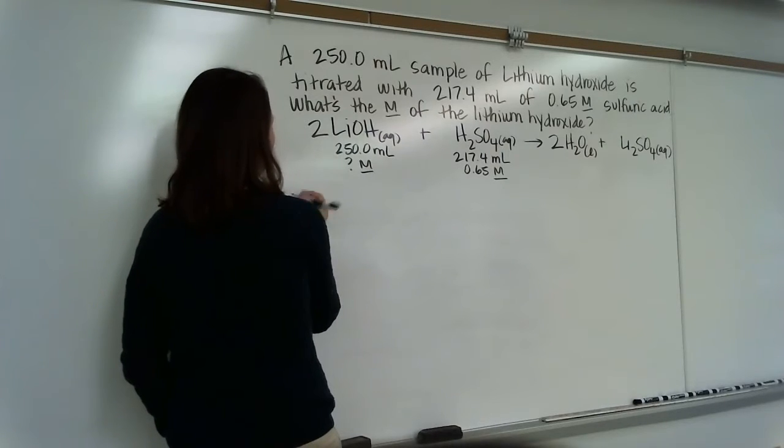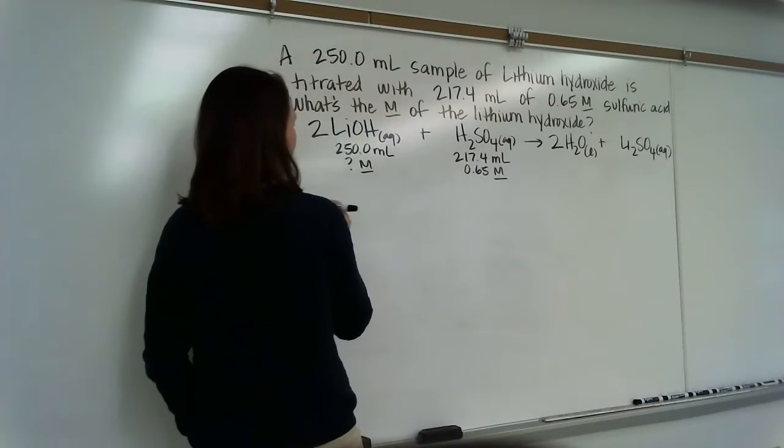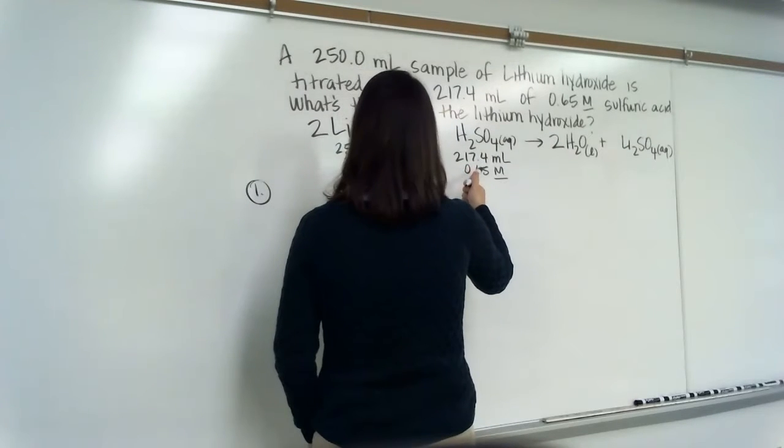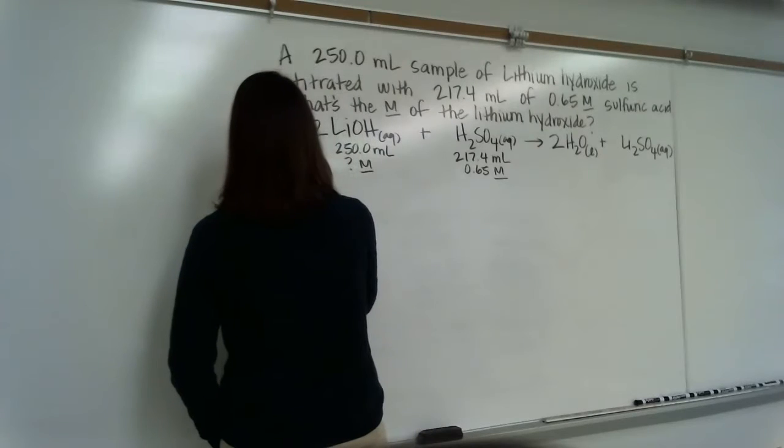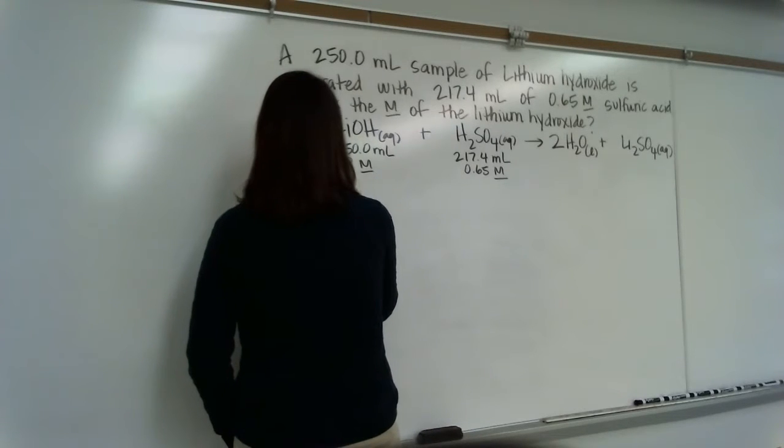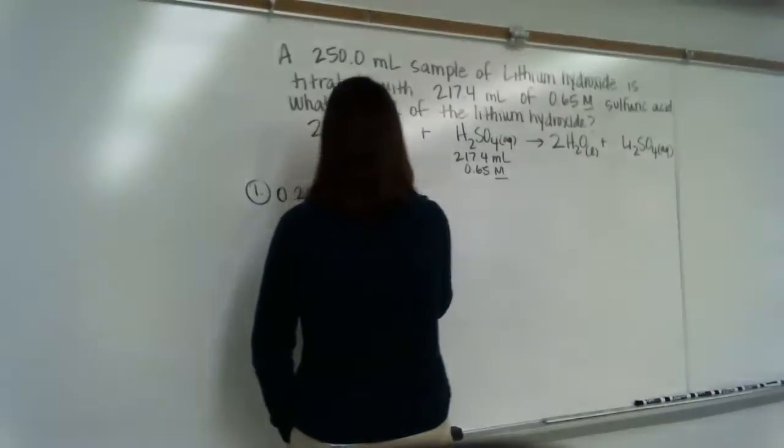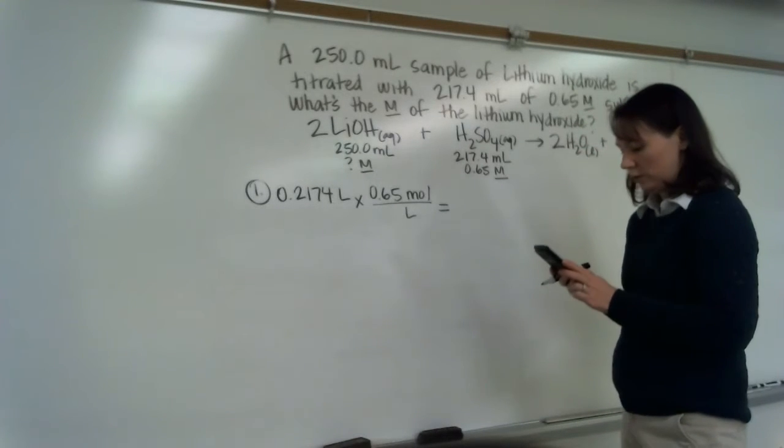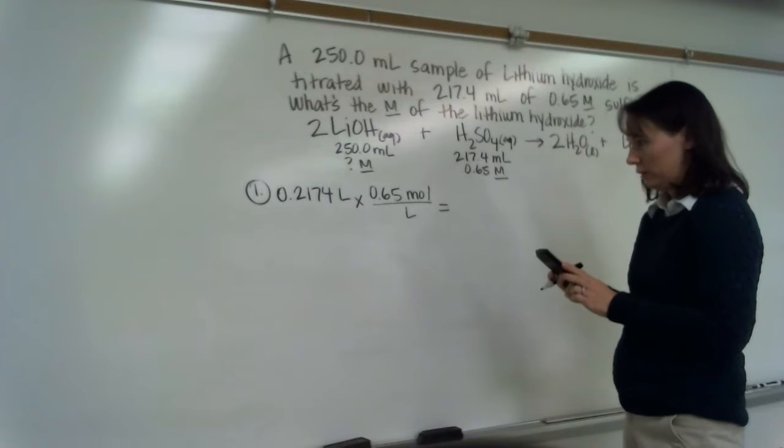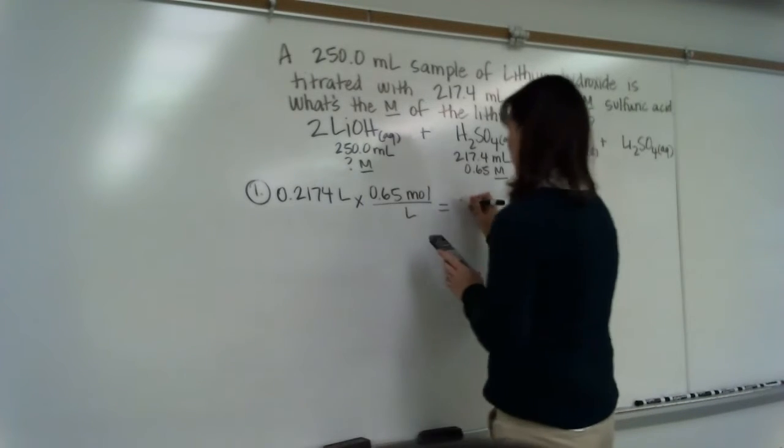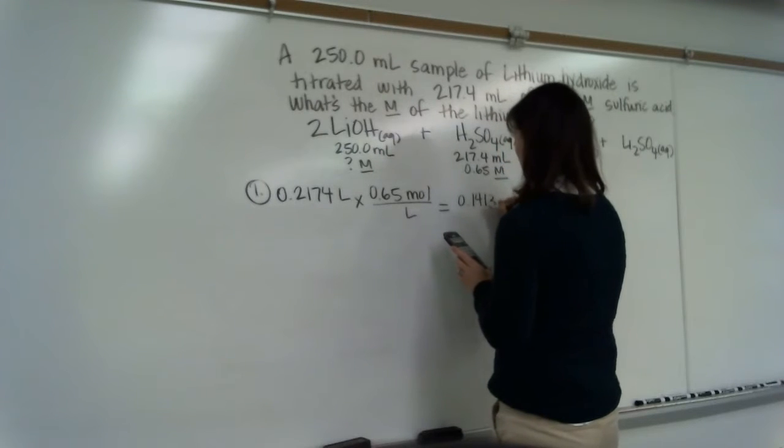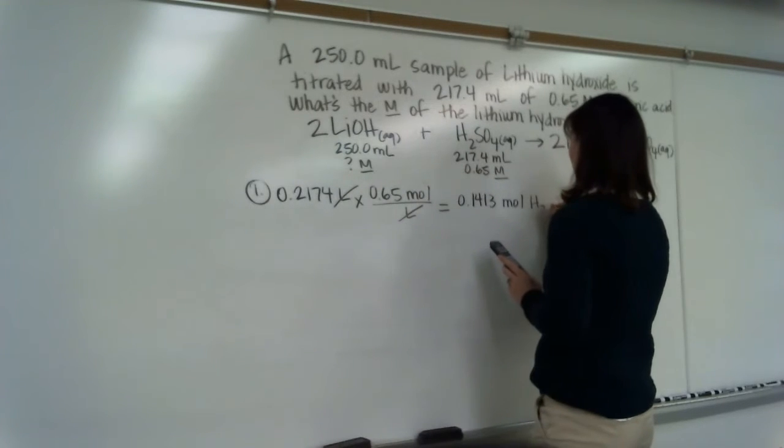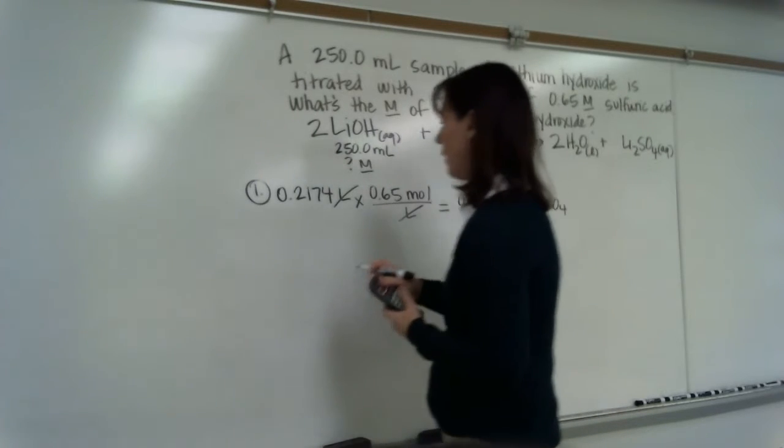Let's go through our steps. This time we're solving for the base. In the last example we solved for the acid. This time we're solving for the base. So step one, molarity times volume of the known. So molarity is 0.65. What's this volume in liters? Just move the decimal three to the left. So that would be 0.2174 liters times 0.65 moles per liter. So 0.2174 times 0.65 gives me 0.1413 moles. And this is moles of H2SO4.